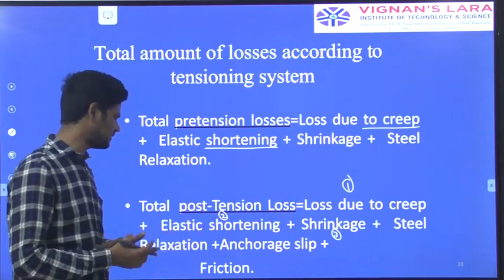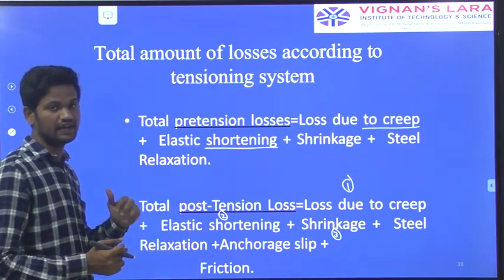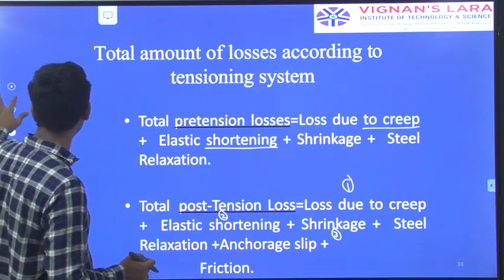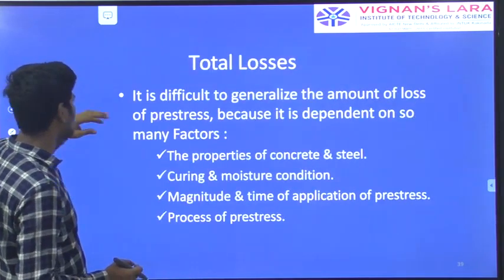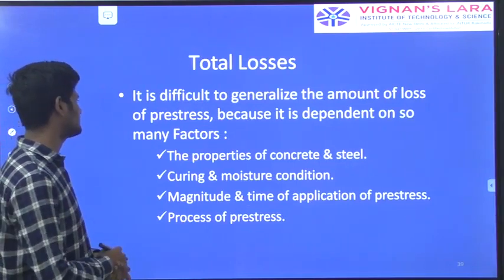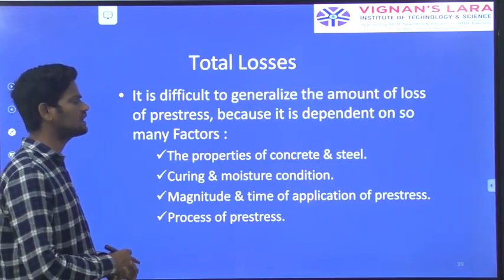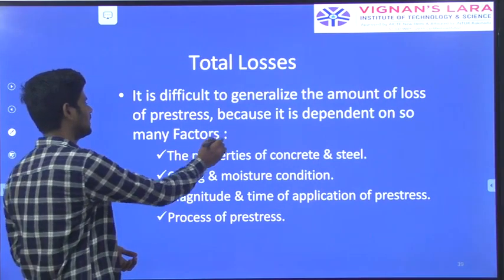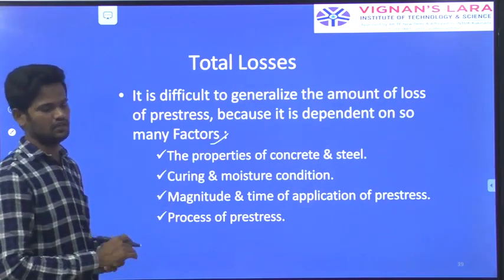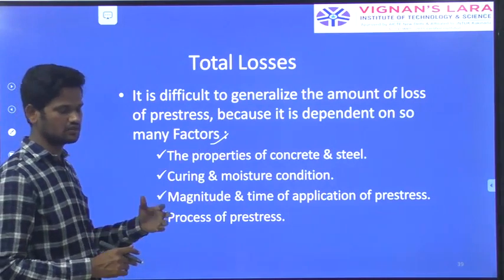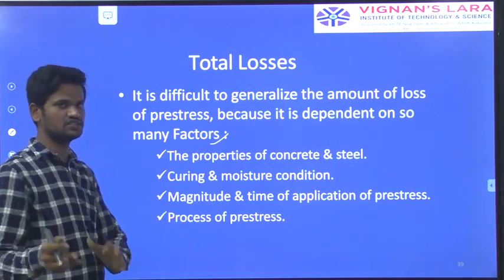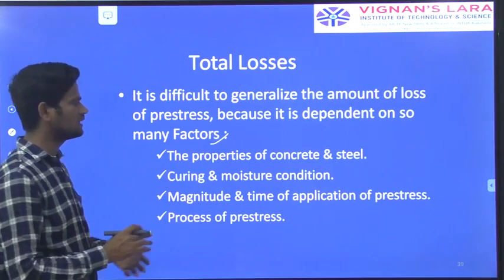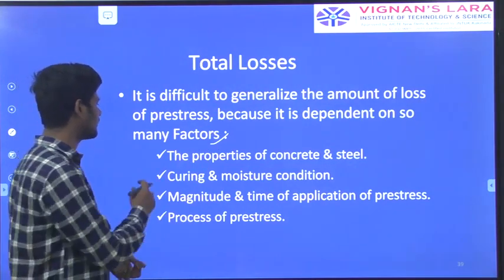These anchorage slip and friction losses are added for post-tension, which gives the losses of the post-tensioned pre-stressed concrete members. These total losses are difficult to generalize because they depend on so many factors. You cannot directly say for a particular type of pre-tensioned member what the amount of loss will be — that loss cannot be stated directly.